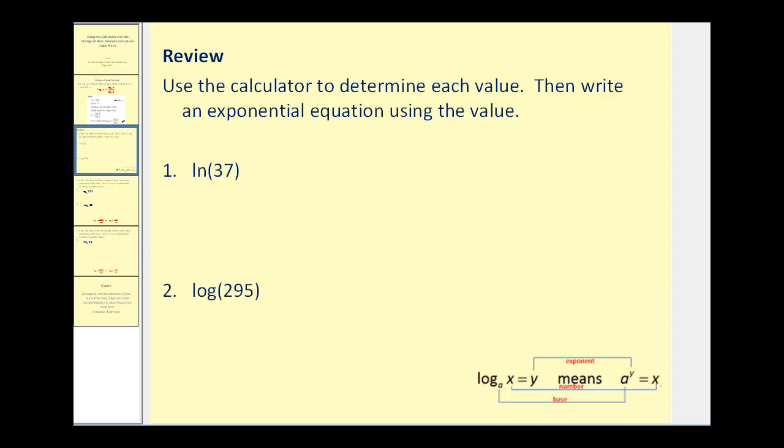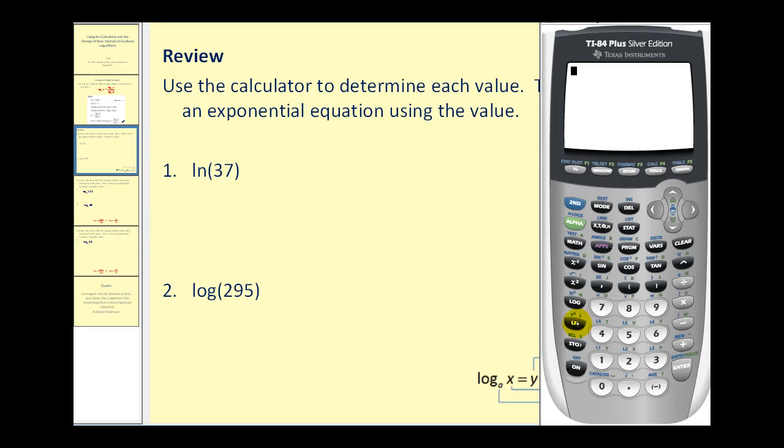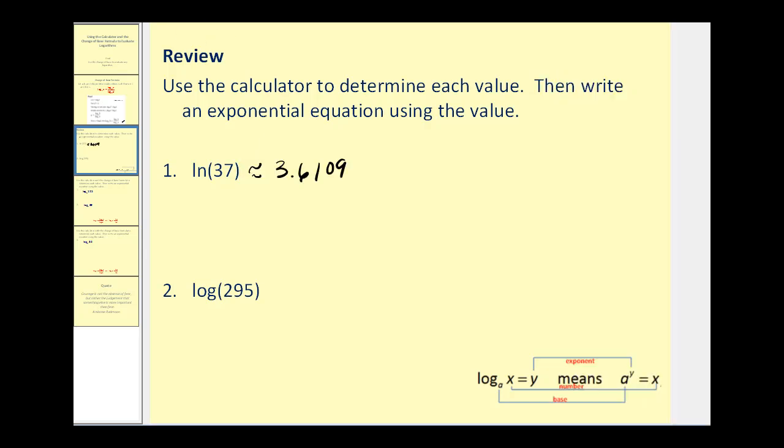Remember a logarithm is an exponent. So when we calculate natural log 37, the result will be an exponent. So we'll say this is approximately 3.6109. Remember natural log is base e. So what this tells us is if we raise e to this power, we'll have approximately 37. So e to the power of 3.6109 is approximately 37.